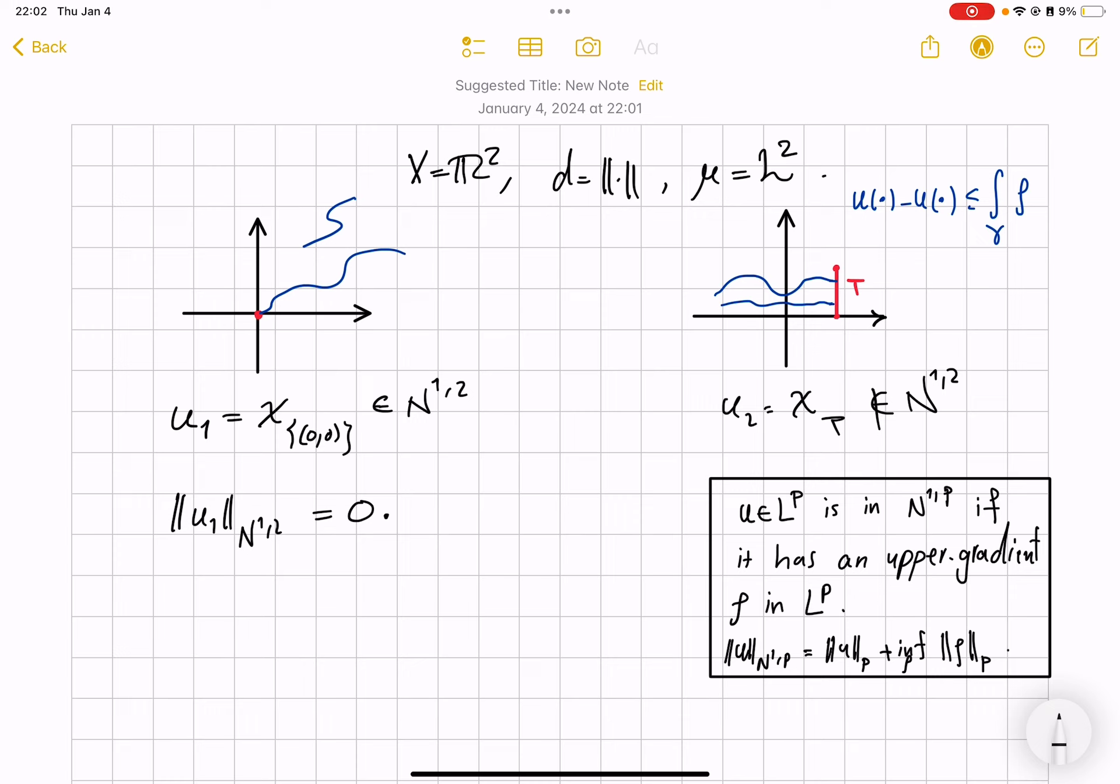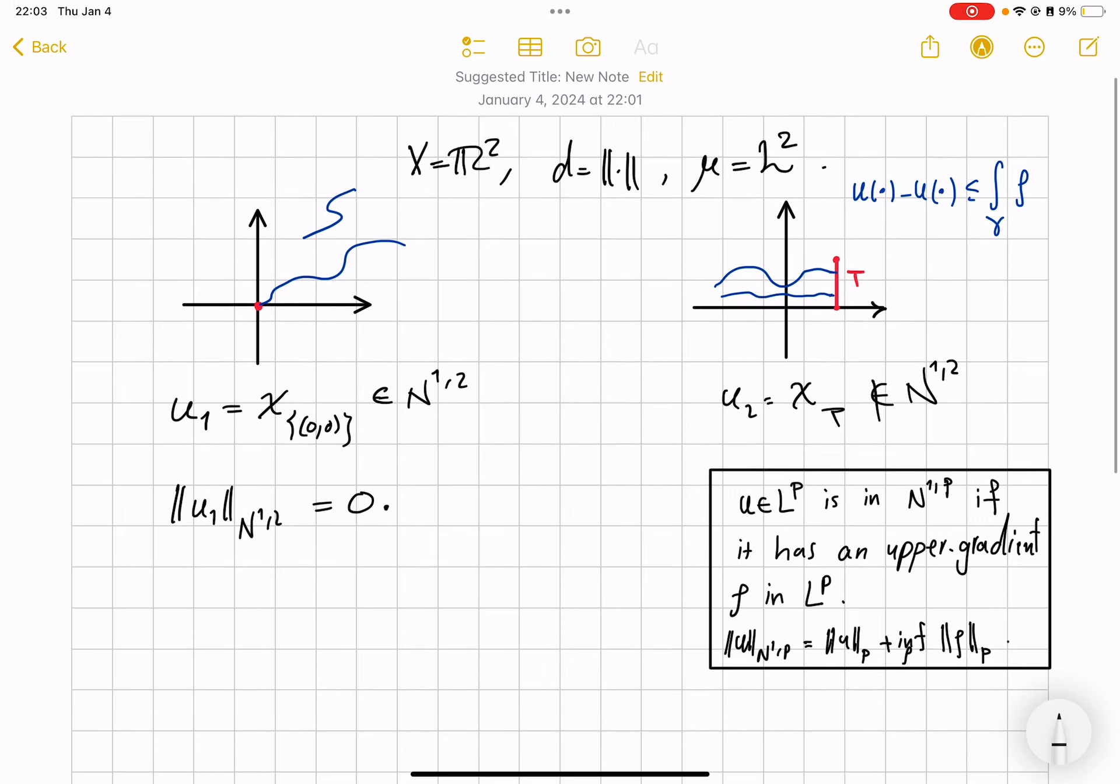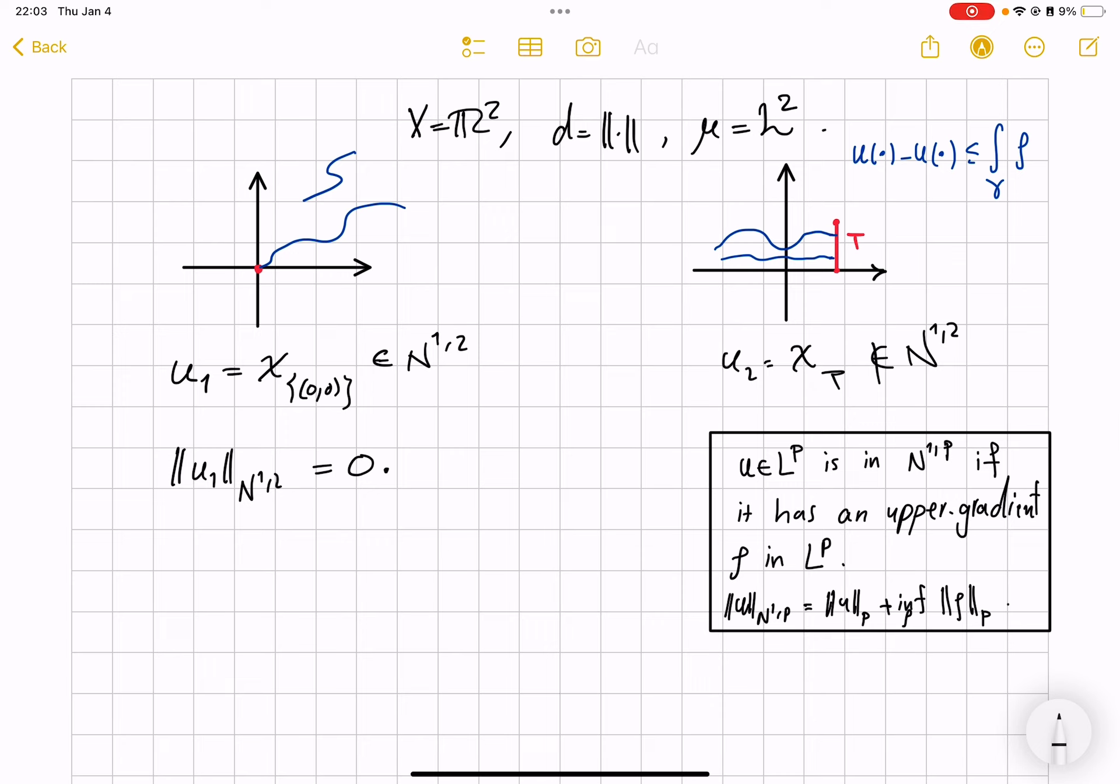On the left we have the function u1 which is equal to 1 only at the origin and 0 everywhere else. And on the right we have a function that is equal to 1 on a line segment and 0 everywhere else.